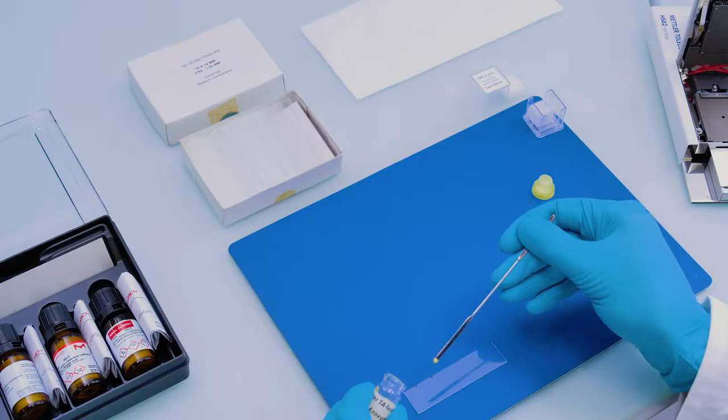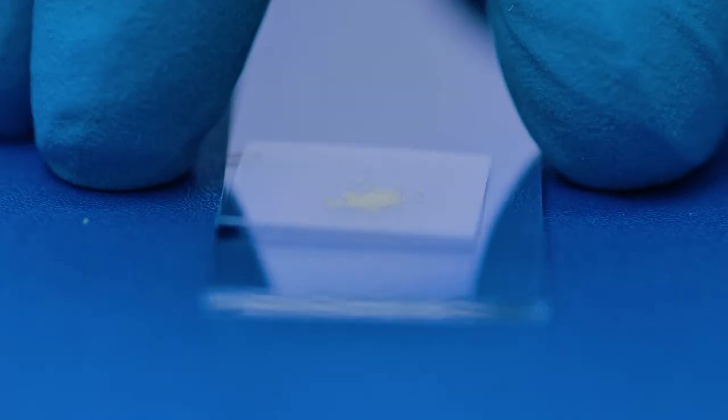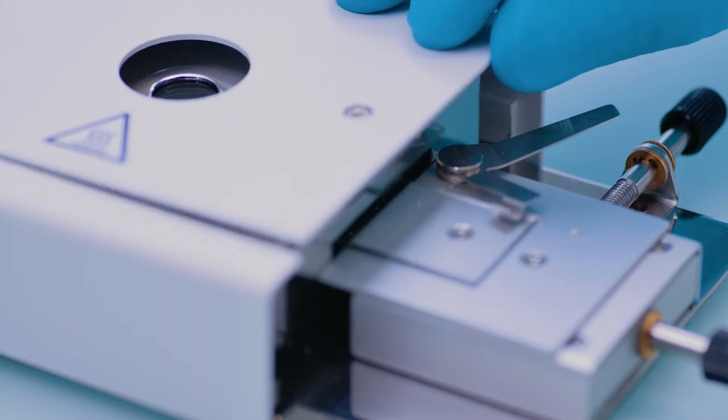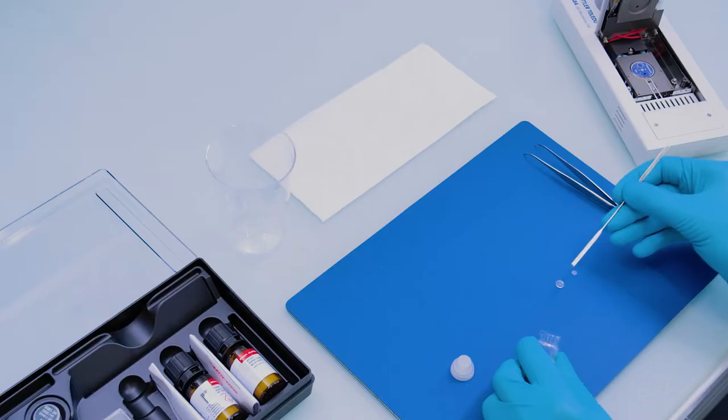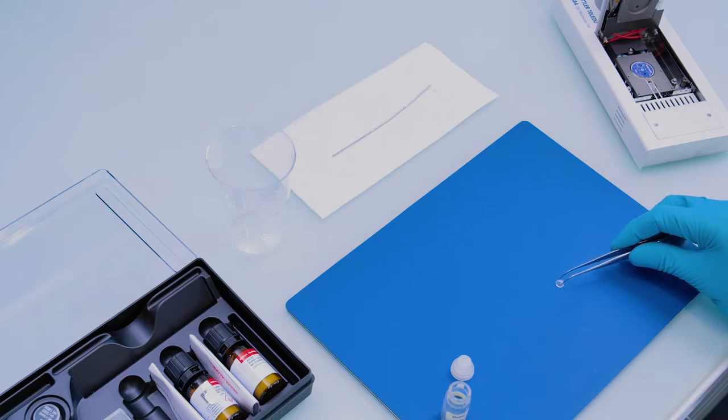In the HS82 you place samples between a microscope slide and a small glass cover, whereas in the HS84 transparent glass or sapphire crucibles serve as the sample containers.